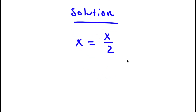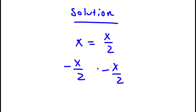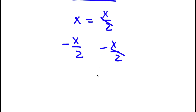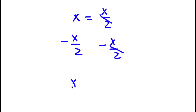Now I'm actually going to subtract x over 2 on both sides. So then these two x over 2s cancel out, and now I'll be left with x minus x over 2 is equal to 0.